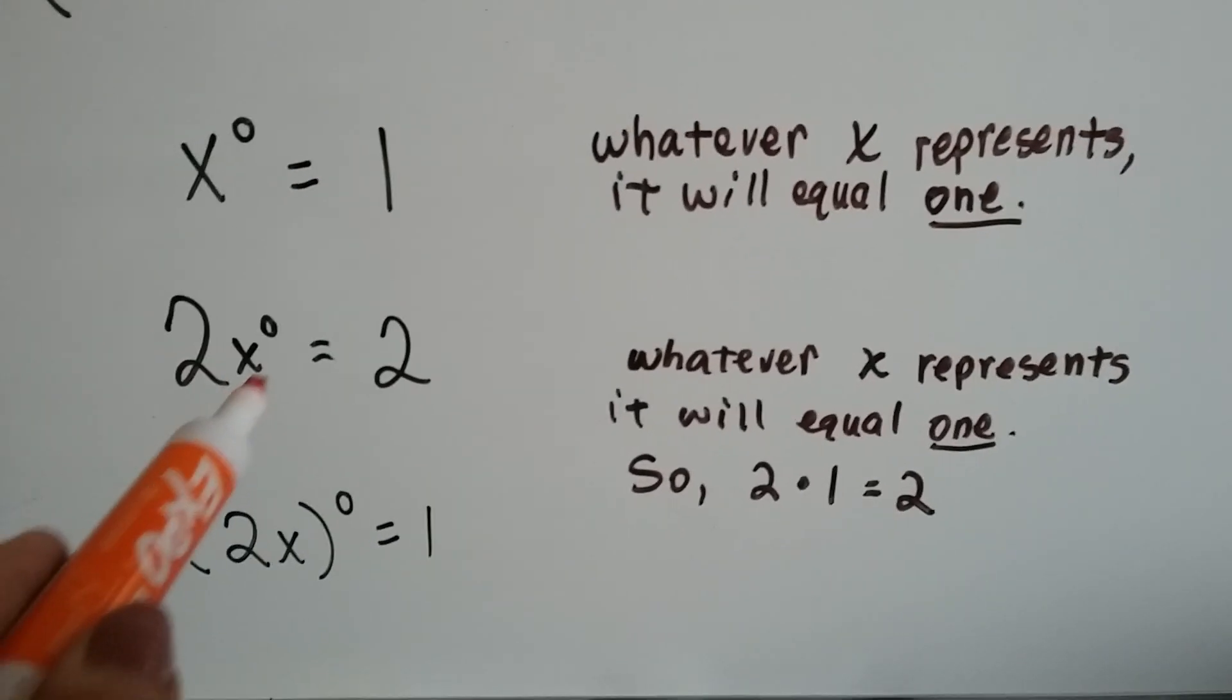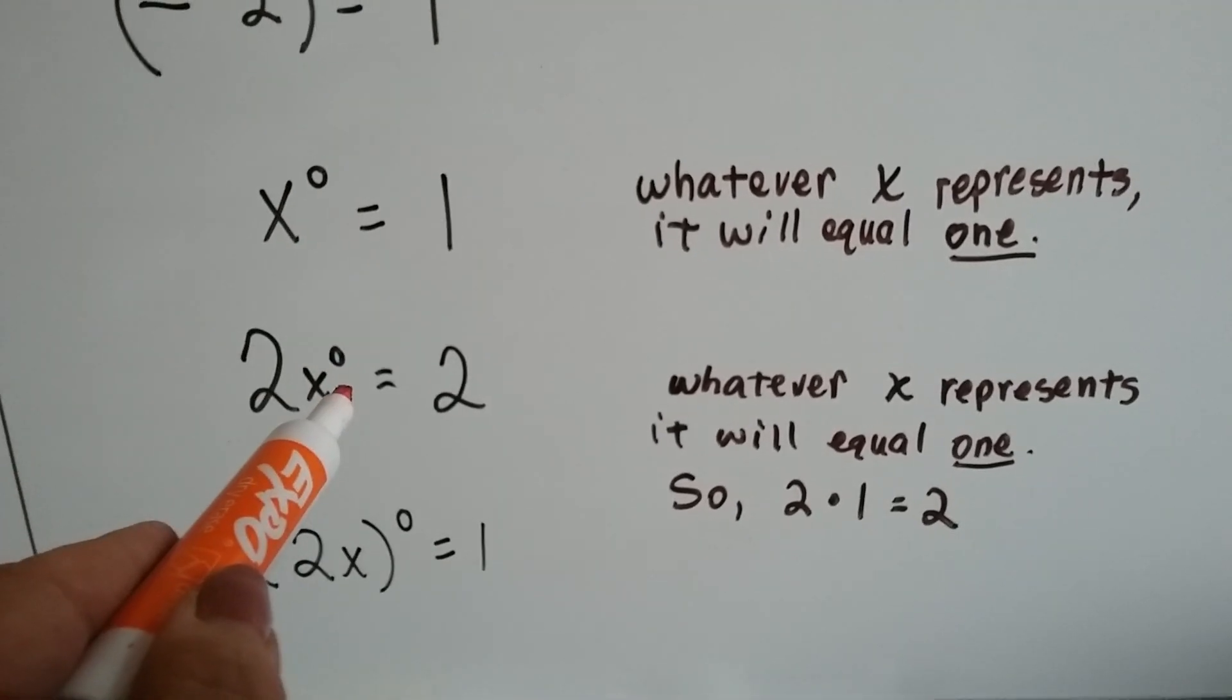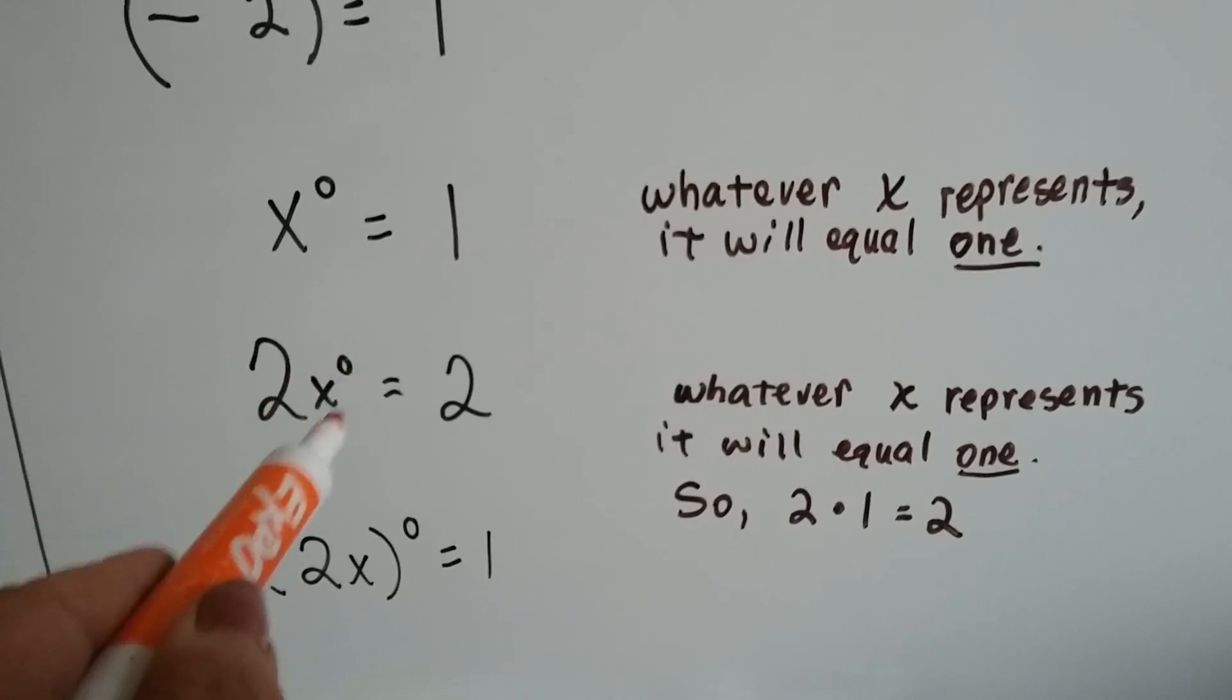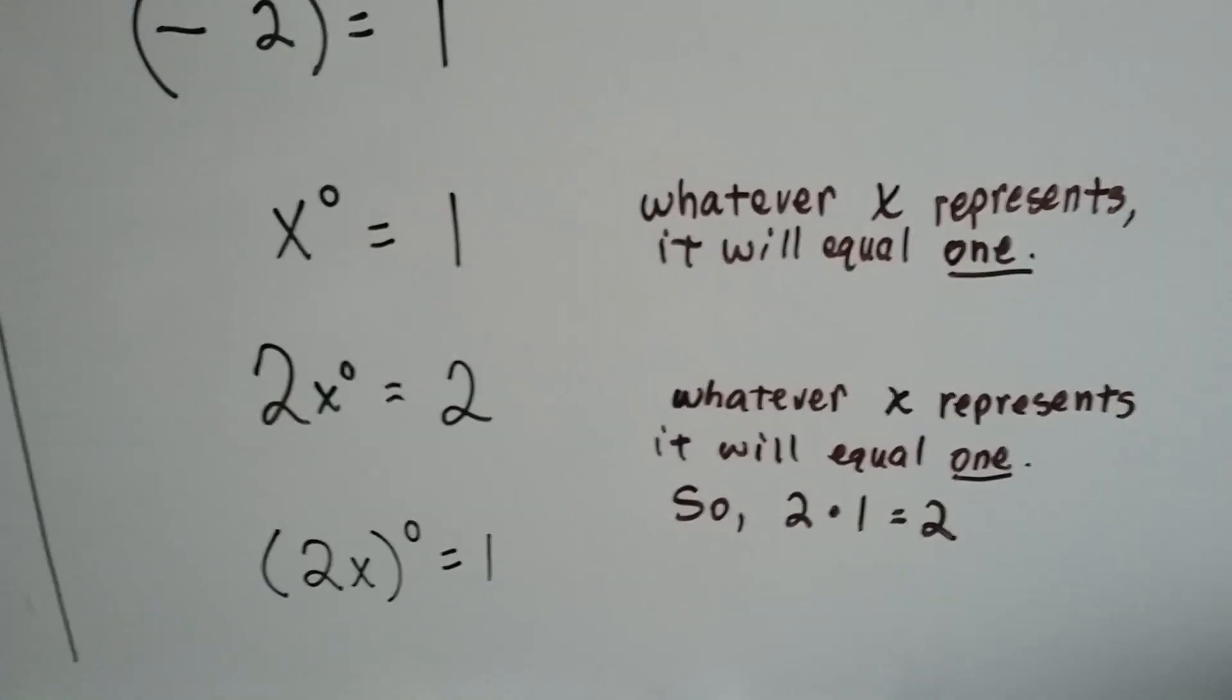So if we have 2 with a variable with a zero power, like this one, then it's just going to be 2 because that's going to equal 1, and they're next to each other. That means multiplication, so 2 times 1 is 2.